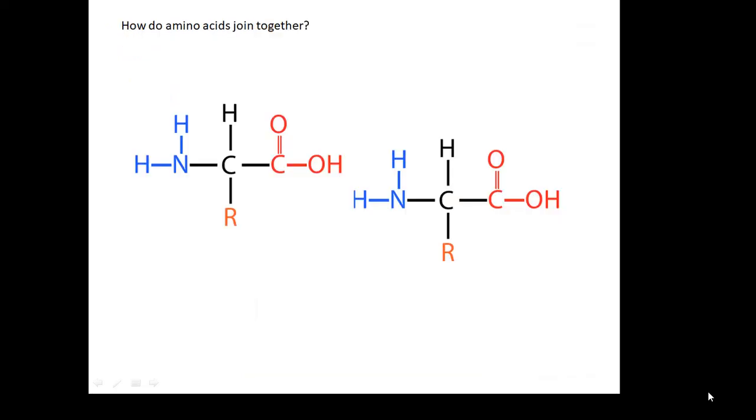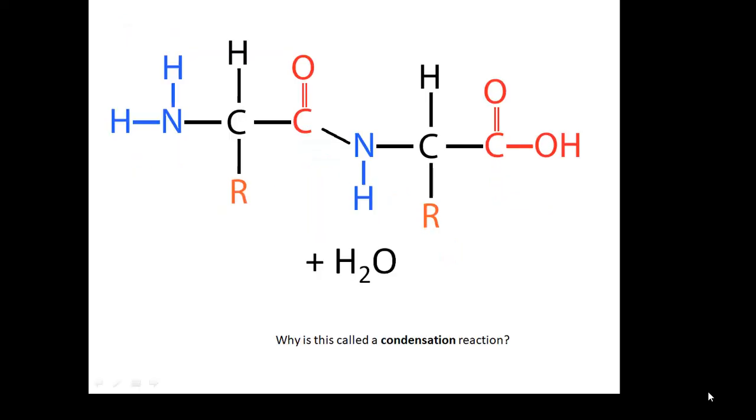How do amino acids join together? Well, here's two amino acids side by side. How do they join together? Well, look in the middle there, and can you see there's an OH and an H, and a reaction occurs between them.